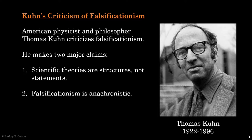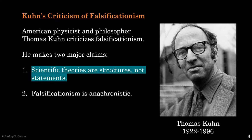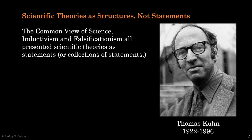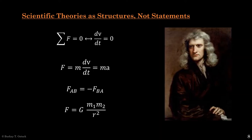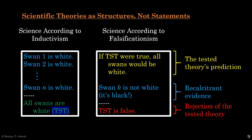Scientific theories are structures as opposed to statements, and falsificationism is anachronistic. All the solutions we have examined so far to the demarcation problem had one common assumption: scientific theories are statements or collections of statements. For instance, consider Newtonian physics. This theory is Newton's three laws of motion and his law of universal gravitation. You can write these laws on a piece of paper as statements.